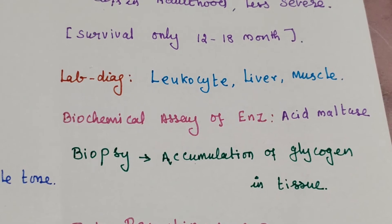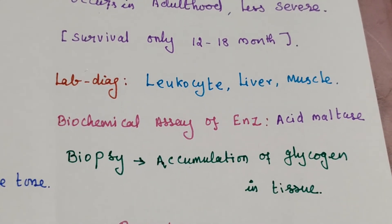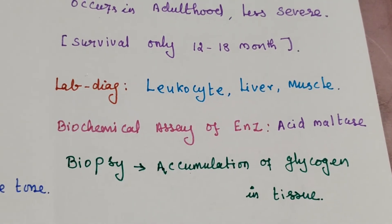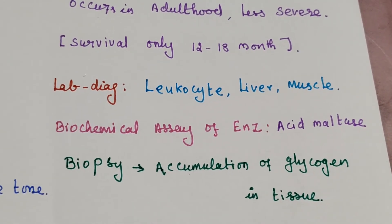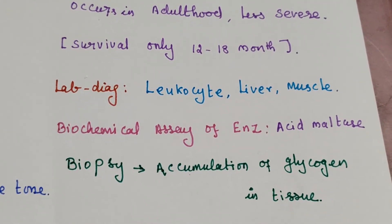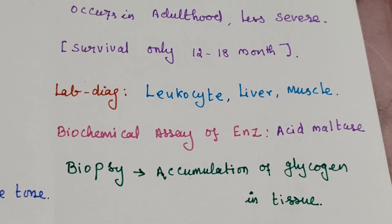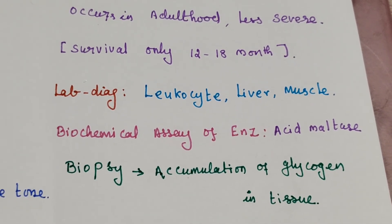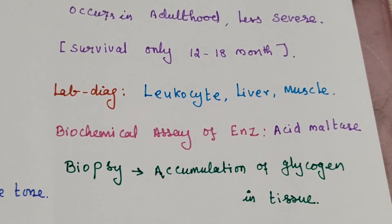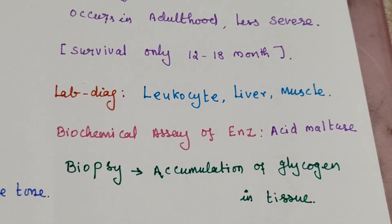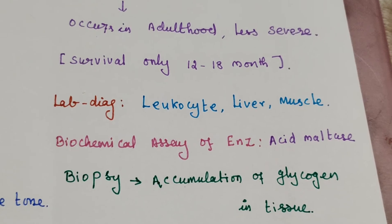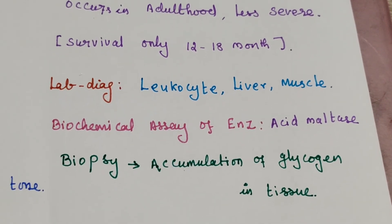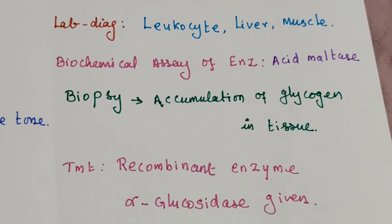In the biochemical assay, decreased levels of acid maltase are found. On biopsy, accumulation of glycogen is seen in the tissue.